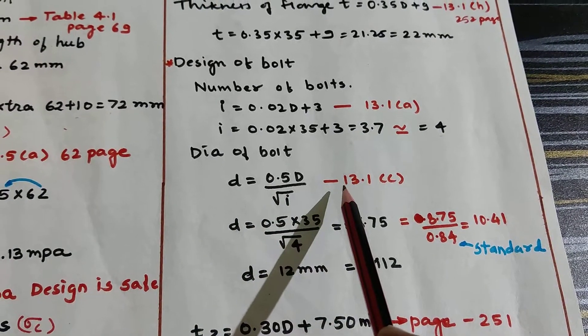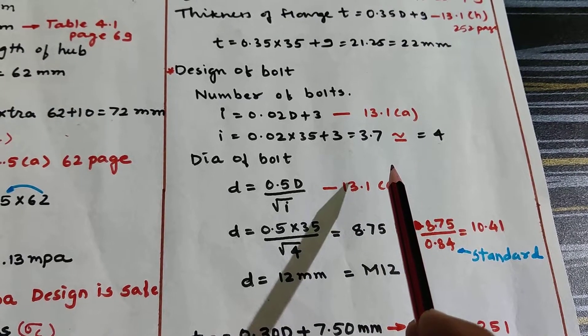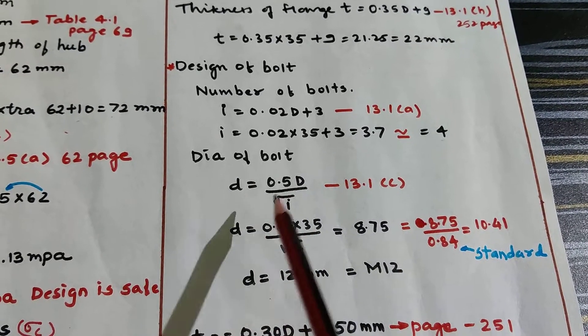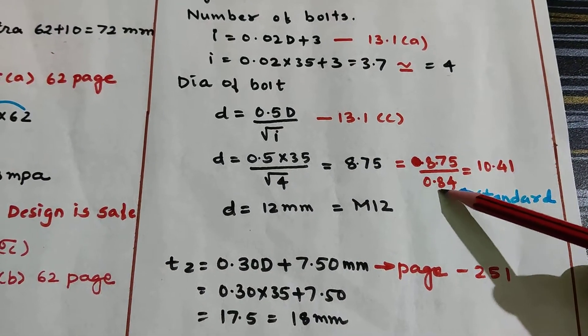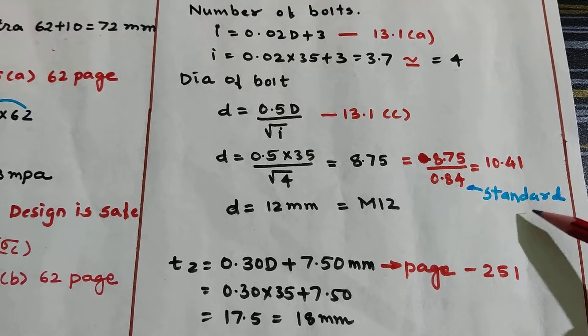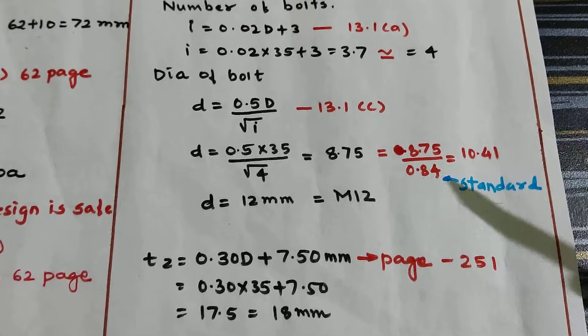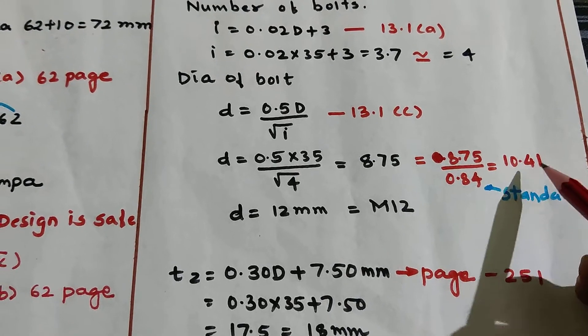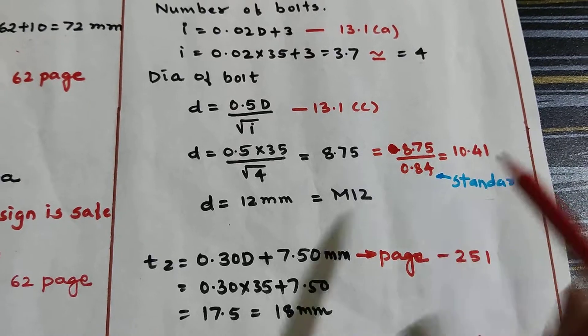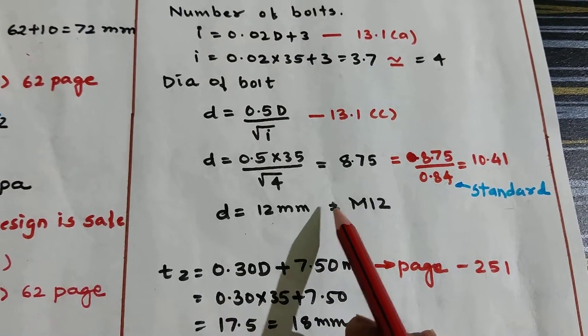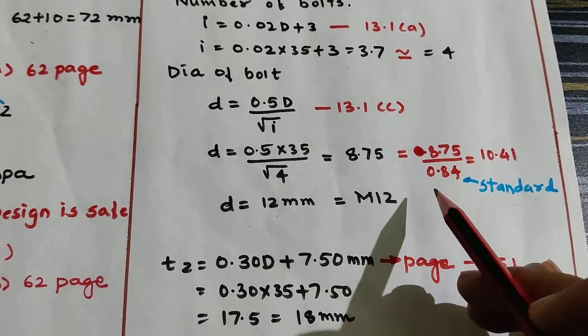The formula is diameter of the bolt: D = 0.5D / √I, where I is number of bolts, equation 13.1C page 251. I got answer 8.75. Now 8.75 divided by 0.84 (standard value), I got 10.41. Next number is 11, but instead of selecting odd number go for even number, so I will use M12 bolt.